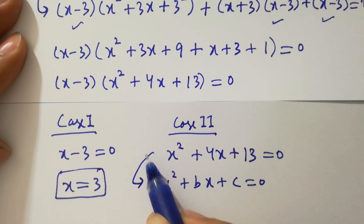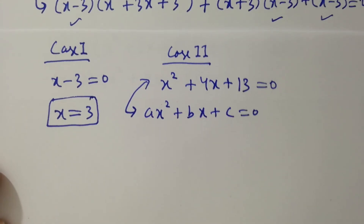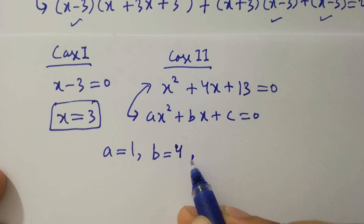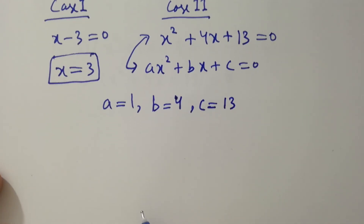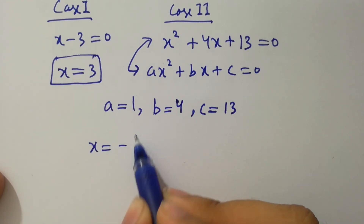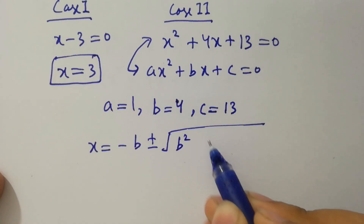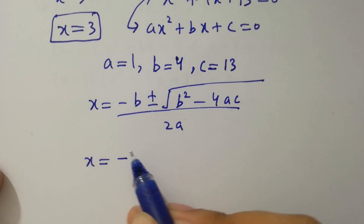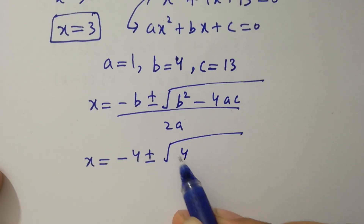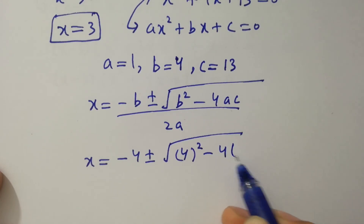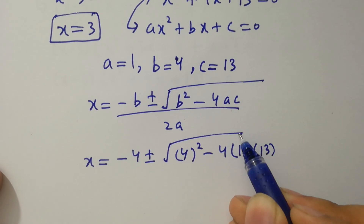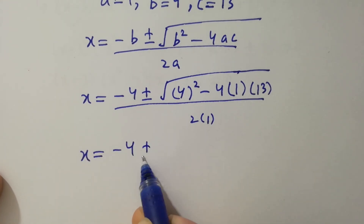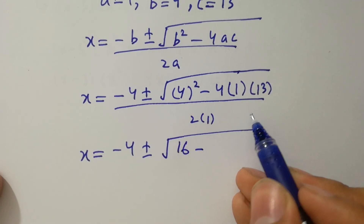By comparing, we have a equals 1, b equals 4, and c equals 13. Using the quadratic formula, x equals minus b plus or minus square root of b squared minus 4ac, over 2a. Substituting: x equals minus 4 plus or minus square root of 16 minus 4 times 1 times 13, over 2.